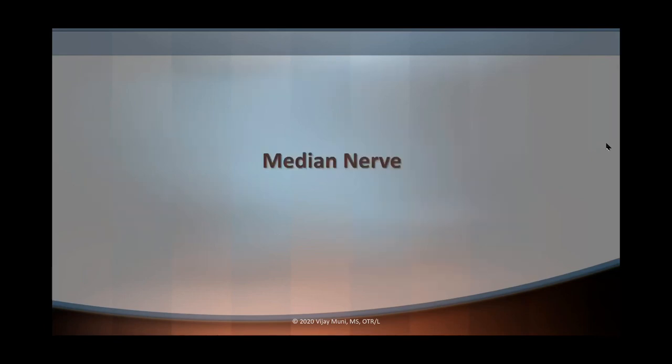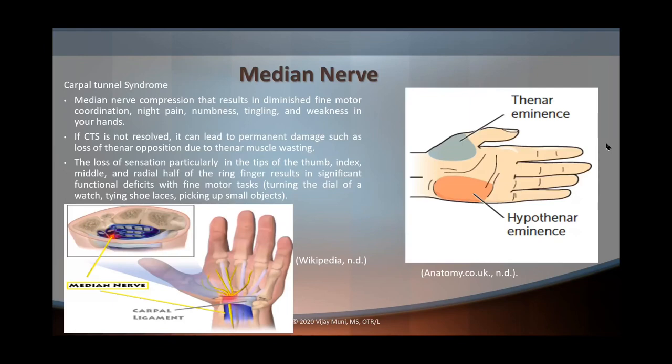Now let's talk about the median nerve. Carpal tunnel syndrome is one of the most common median nerve injuries. With carpal tunnel syndrome, we know that there's night pain, numbness, tingling, and weakness in your hands, as well as diminished fine motor control. If carpal tunnel isn't resolved, it can lead to permanent atrophy of the thenar eminence. If the thenar eminence atrophies, the person is going to lose access to their thenar muscles such as flexor pollicis brevis, abductor pollicis brevis, and opponens pollicis, and lose thumb opposition.